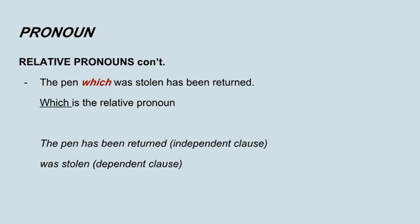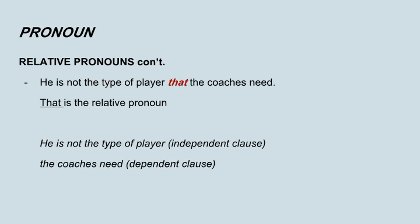The pen which was stolen has been returned. In this sentence, which is the relative pronoun. The pen has been returned is the independent clause, and was stolen is the dependent clause. He is not the type of player that the coaches need. The relative pronoun in this sentence is that. The independent clause is he is not the type of player, while the dependent clause is the coaches need.